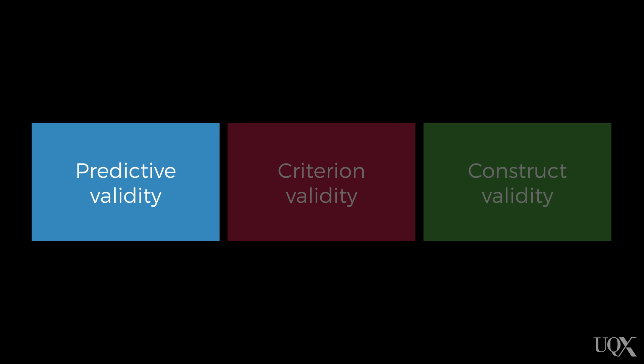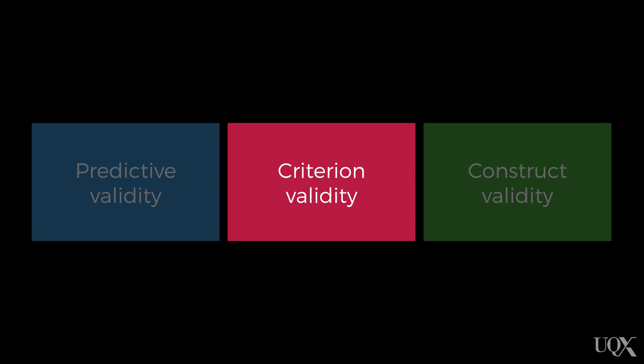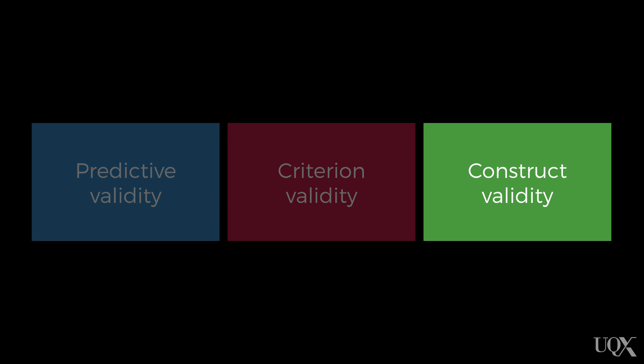When we're talking about things like intelligence, we can't just go to the hardware store and buy a tool for measuring intelligence. Tests measuring intelligence have to be developed. We then have to make some estimate of the extent to which these tests are actually measuring what we agree is the thing that we're calling intelligence. There are three major types of validity: predictive validity, criterion validity, and construct validity.